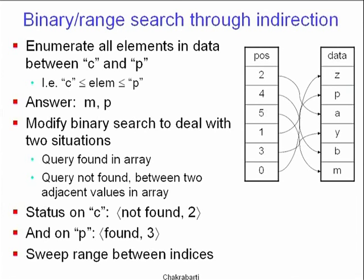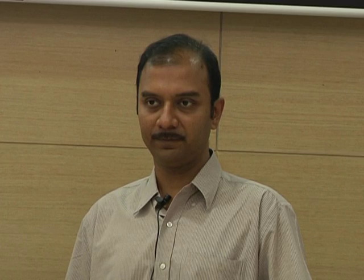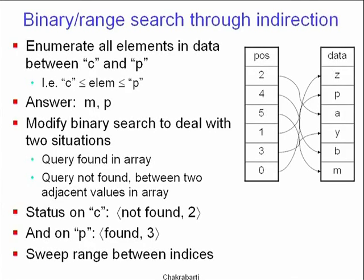For range searches, we need to modify binary search to deal with the pause array and two distinct situations: one where the query is found, and one where it is not found but should be inserted between two adjacent values. For example, searching for C returns 'not found' with insertion position 2, since A and B occupy positions 0 and 1. Searching for P returns 'found' at index 3 in sorted order.